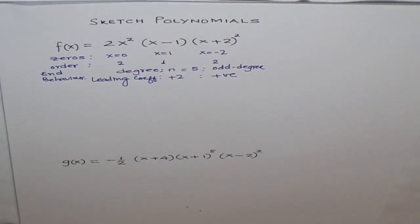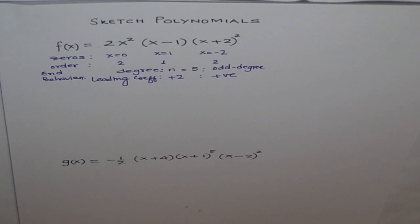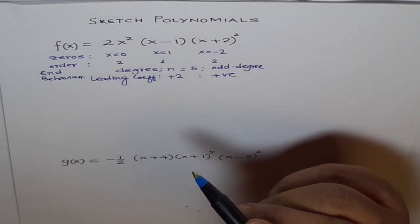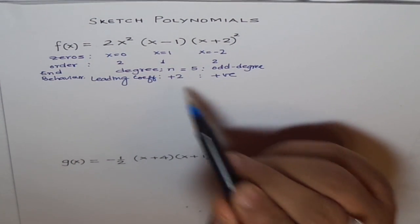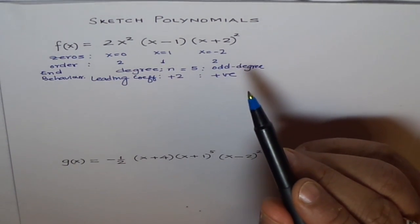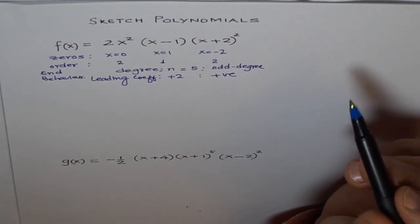If you have an odd degree function and leading coefficient is positive, what do you expect as the end behavior? Odd degree means both ends will be on the opposite sides. And a leading coefficient of positive means right side up. That means our graph will go from quadrant 3 to 1.